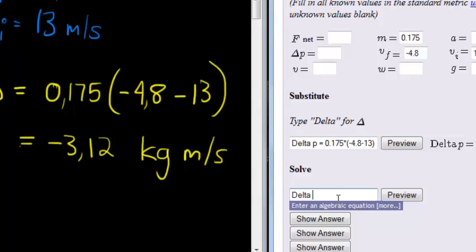So delta P is equal to, and we worked it out, negative 3.12 kilogram meters per second to the power of negative 1. Preview.